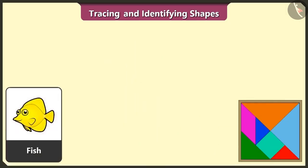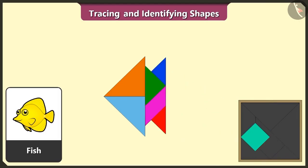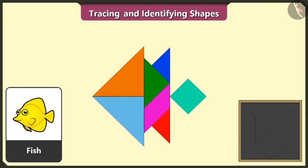This is a fish. Let's try and create a fish using two triangles, one quadrilateral, one more triangle, two more triangles, and one square. And we have created a fish!